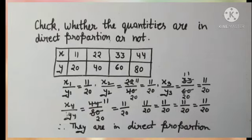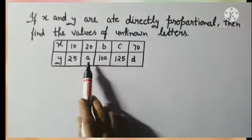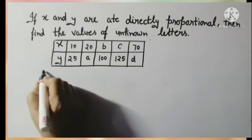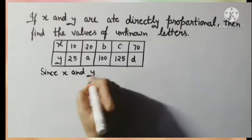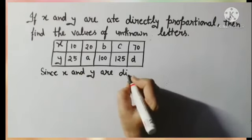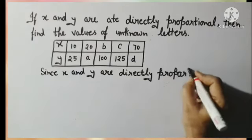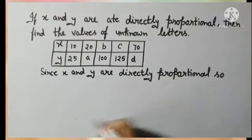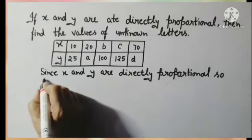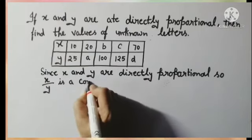Now we are going to see more examples. If x and y are in direct proportion, find the values of the unknown letters. Here a list of values are given for x and y, and three numbers are missing: a, b, c, and d. Since x and y are directly proportional as given in the problem, we can identify that the ratio x/y is constant — all values' ratios are equal to a constant number.